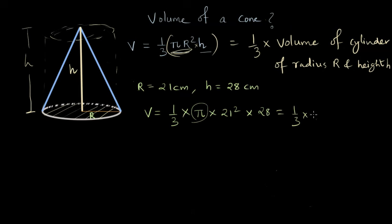So let's write it as 1/3 times 22/7 times 21² times 28. Since 28 is 7 times 4, we can simplify 28/7 as 4, and then we can rewrite this formula as 1/3 times 22 times 21² times 4.